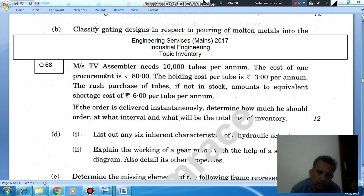MSTV assembler needs 10,000 tubes per annum. The cost of one procurement is Rs. 80, holding cost per tube is Rs. 3 per annum.